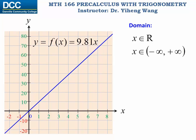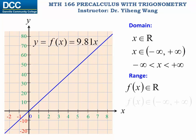This notation means that x belongs to the real number set, or x belongs to the real number interval from negative infinity to positive infinity. If you are not familiar with set theory, you can simply write it out as x is any number bigger than negative infinity and smaller than positive infinity. Similarly for the range, since the output can also be any real number, we write it the same way.